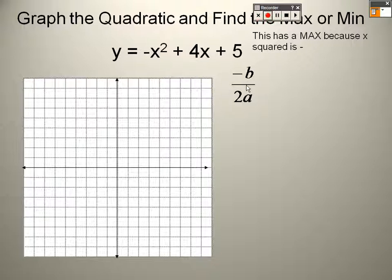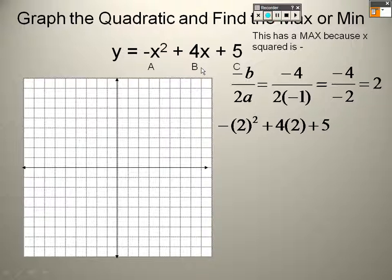So it's negative 4 over 2 times a negative 1, which is negative 4 over negative 2, which is positive 2. Well, that's easy enough to plug in. So 2, when I plug that in there, I'm getting 9. So my max is over 2 and up 9. And there's that point.